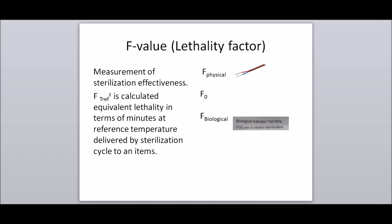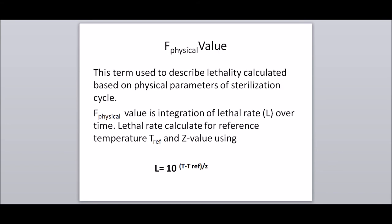We will see what is F physical, F zero, and F biological. F physical value: this term describes lethality calculated based on the physical parameters of a sterilization cycle. F physical is the integration of lethal rate L over time. Lethal rate is calculated from the reference temperature T-reference and Z value using the formula: L = 10 raised to (T minus T-reference) divided by Z.